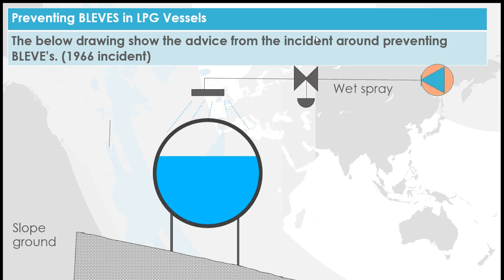Water spray is very interesting. In the current standards, you cannot take any credit for a water spray system when sizing your pressure relief. The reason is that it's an activated system — many things have to work correctly. The Feyzin disaster was a good example, where there wasn't enough water. For a water spray system you need enough water, your pump to work, your valves to work, your sensor to work — and any one of these could fail at any time without you knowing. So you're not allowed to take credit for that when sizing your pressure relief.